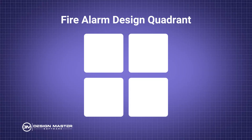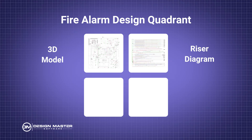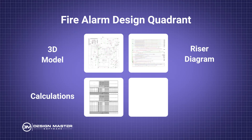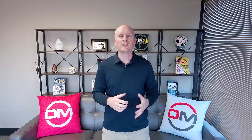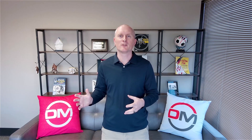We have four boxes. The first is the 3D model. Then we have the riser diagram, the calculations, and the operations matrix. You put these four together and you have BIM that's going to be useful for fire alarm design.